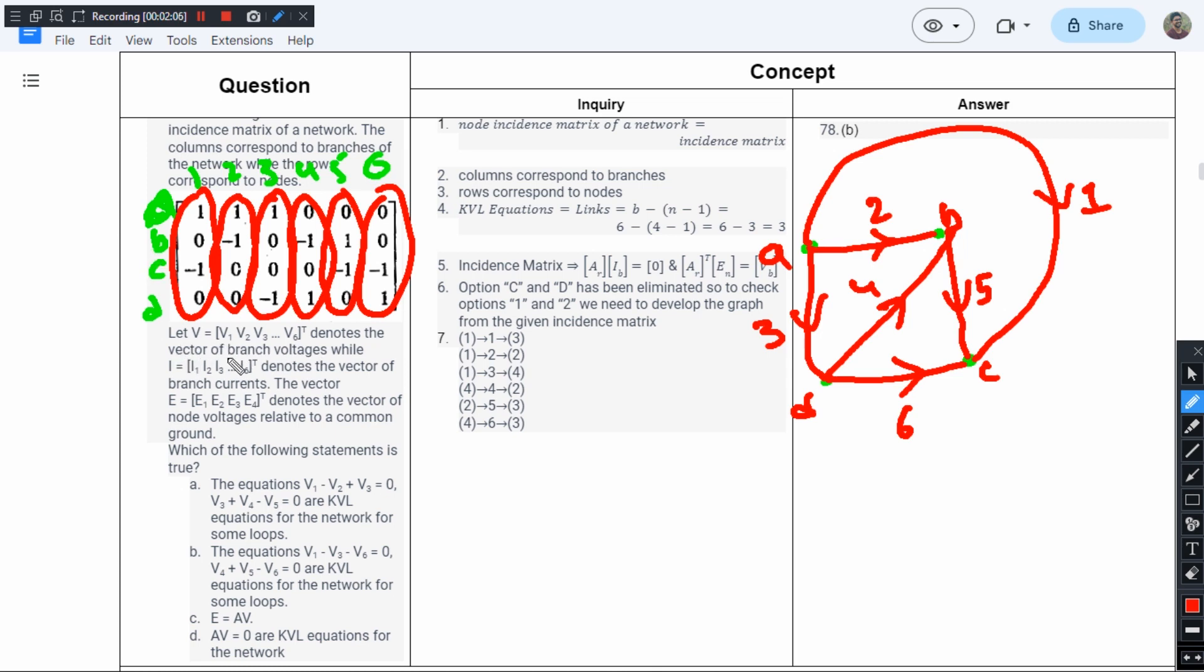Here we have V denoting the branch voltages. We have six branches, so we have six voltages: V1, V2, V3, V4, V5, V6. While I denotes the vector of branch currents: I1, I2, I3, I4, I5, I6.